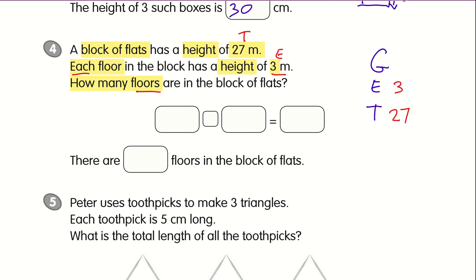Now, how many floors are there in the block of flats? We need to find out the number of floors, which represents the group. If you have E and you have the total, you need to divide. So 27 divided by 3 gives you 9. There are 9 floors in the block of flats.